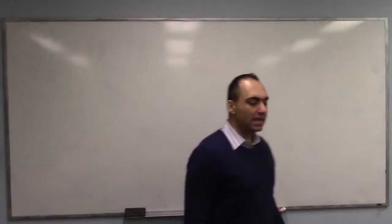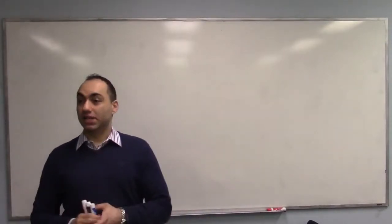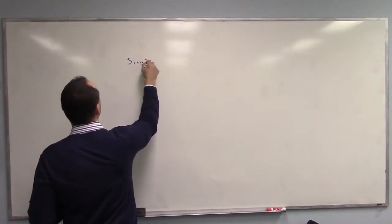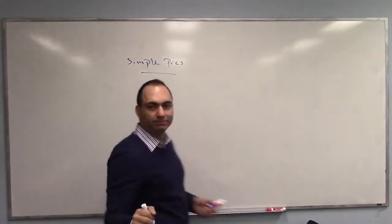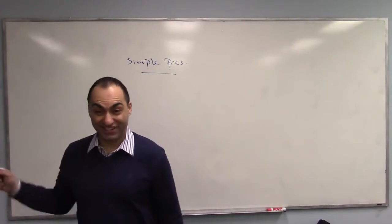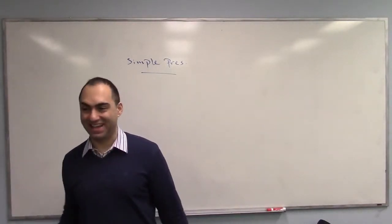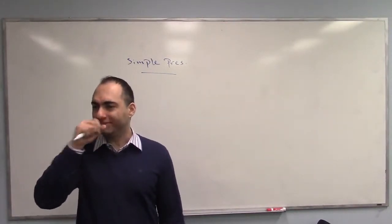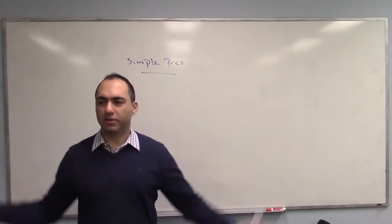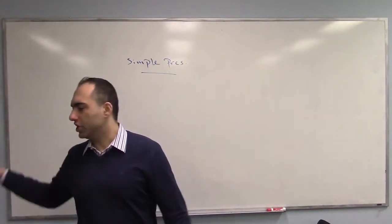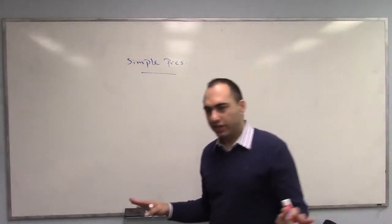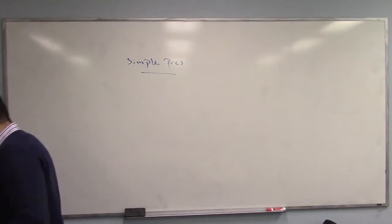Alright, so verb tenses review. I want to look at a lot of examples. Starting with Simple Present: 'I eat my breakfast today' — is that Simple Present? No. 'I ate breakfast this morning' — that's past. Simple Present is for routines: every day, every week, usually, sometimes, never. For example: 'He goes to school,' 'I study English,' 'He goes to bed late,' 'I wake up early.' Very easy.